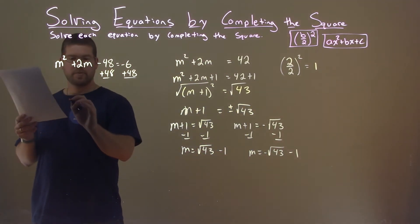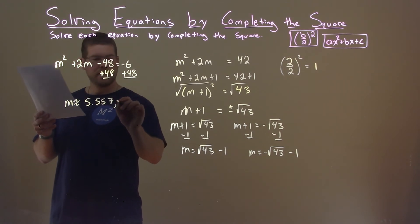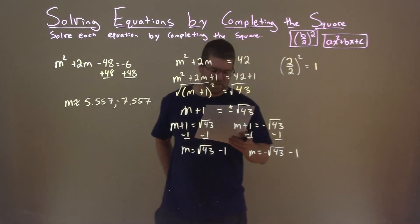Those now, in decimal form or approximate here, are approximately 5.557 and negative 7.557. And so that is our final answer.